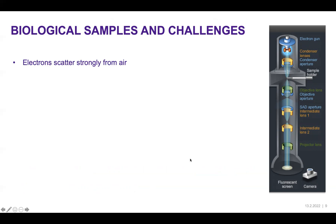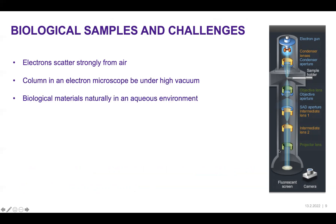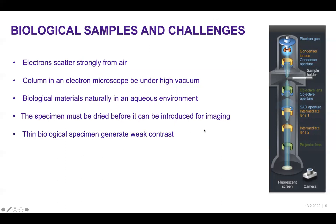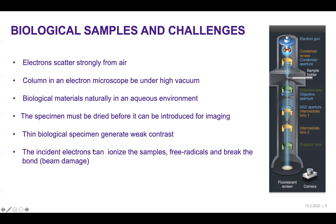That's partly because electron microscopes generally operate at high vacuum to prevent the scattering of electrons from air. Biological samples are typically in an aqueous environment in their native state, which means we have to dry them before imaging. This drying creates drying artifacts and biological specimens generate very weak contrast. Purely biological, organic, or soft material samples can also lead to a lot of electron beam damage, including ionization, free radical creation, and bond breaking at high energy.